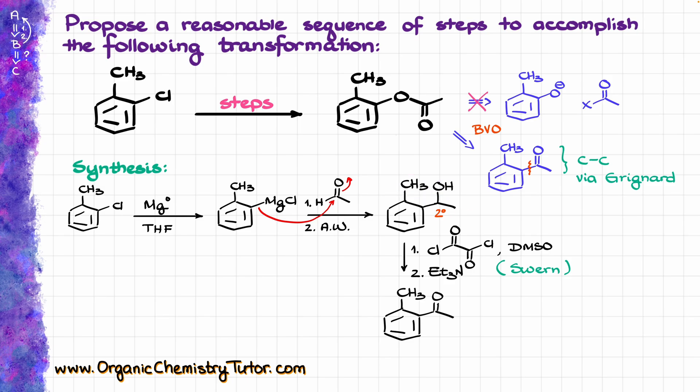So now, when I have my ketone, the last thing here is to do my Baeyer-Villiger oxidation, which is just a reaction with meta-chloroperoxybenzoic acid — MCPBA — or any other peroxy acid for that matter. It doesn't really matter which peroxy acid you are going to use, and as a result, we are going to get our target molecule.